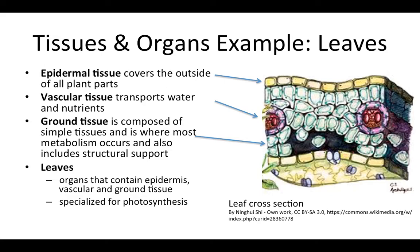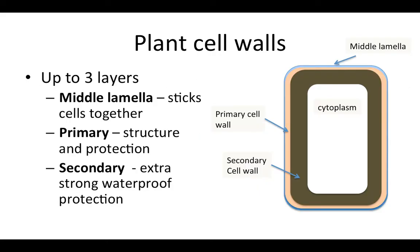There are also cells specialized for structural support within the ground tissue. The ground tissue is where most metabolism occurs within the plant. Leaves contain all three of those layers, and leaves are an organ that are typically specialized for photosynthesis. In a moment, we are going to talk about the different simple tissues, but in order to do so, we first need to review the parts of a plant cell wall.